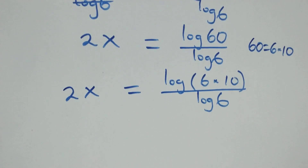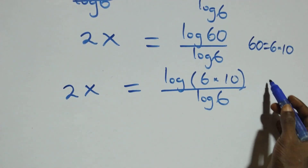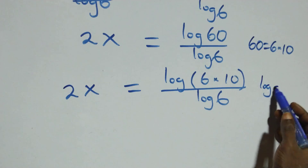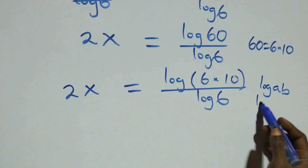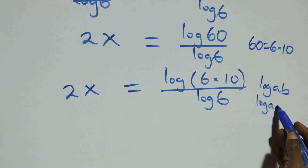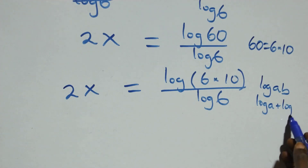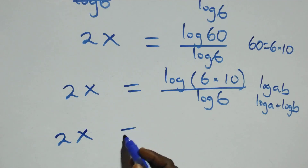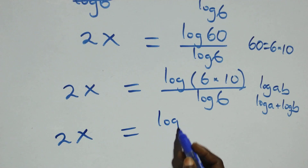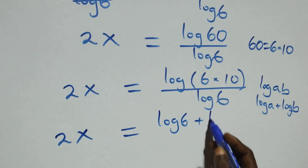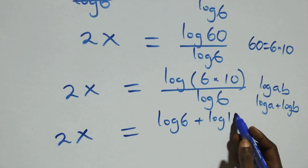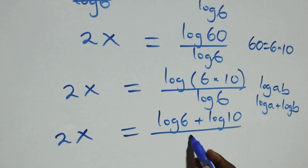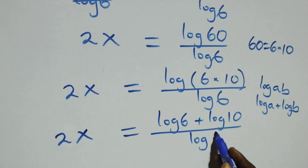This follows the law of logarithm: when we have log(a times b), this is the same thing as log a plus log b. So this becomes 2x equals to log 6 plus log 10, all over log 6.